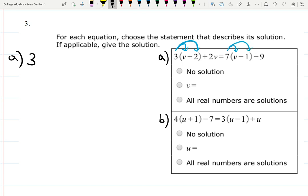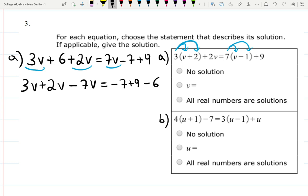3 times v is 3v, plus 3 times 2 is 6, plus 2v equals 7 times v is 7v, 7 times -1 is -7, plus 9. Again, let's collect all the terms with v's on the left-hand side. 3v+2v were already on the left-hand side. Minus 7v shows up, equals -7+9 were already on the right-hand side, then -6 will be on the right. 3+2 is 5, 5-7 is -2, -2v. -7+9 is 2, 2-6 is -4. V equals 2. Put it in the box. V is 2, one unique solution. Maybe check mark is better.